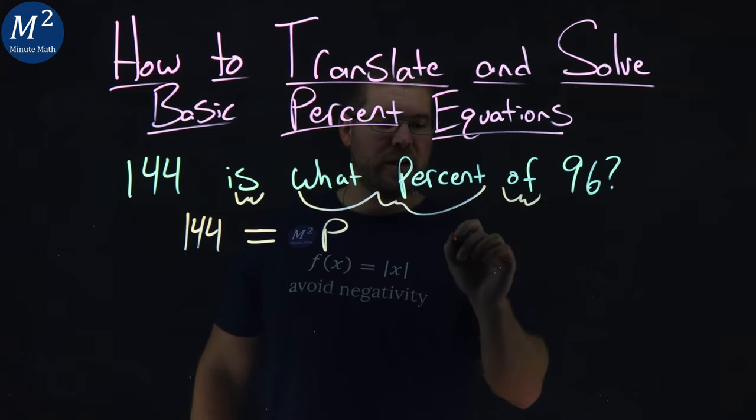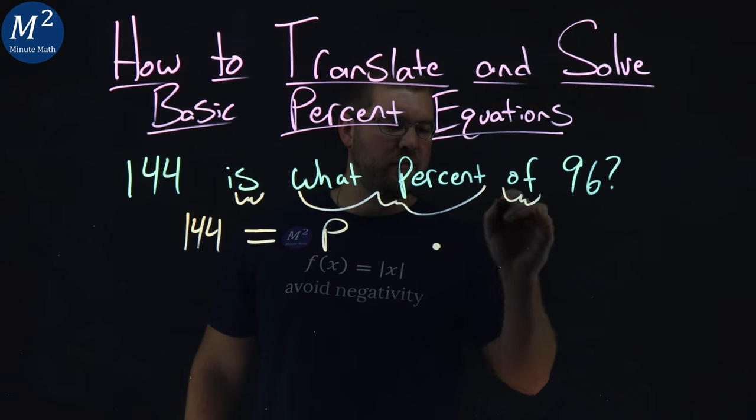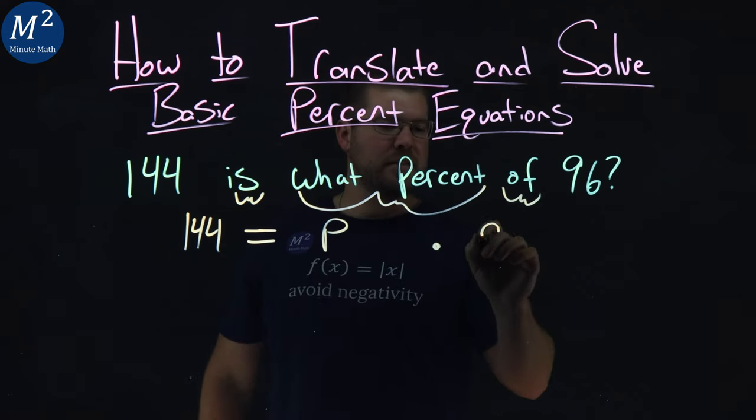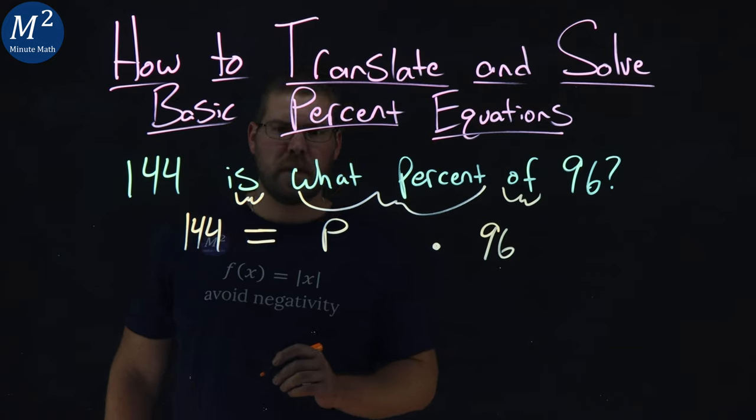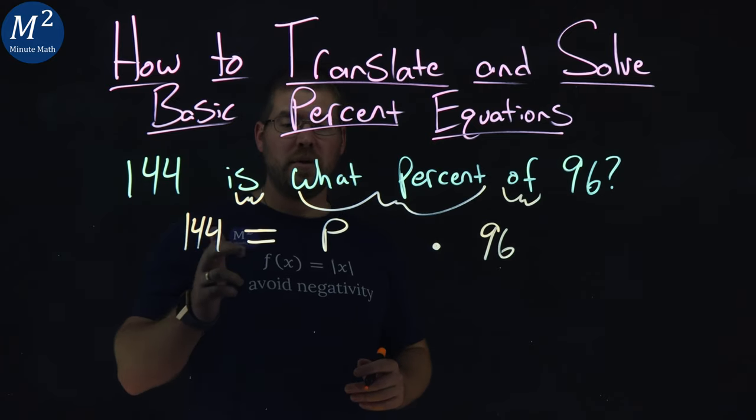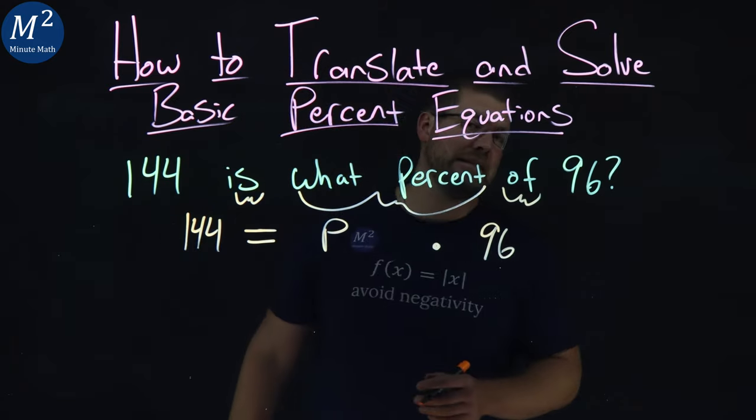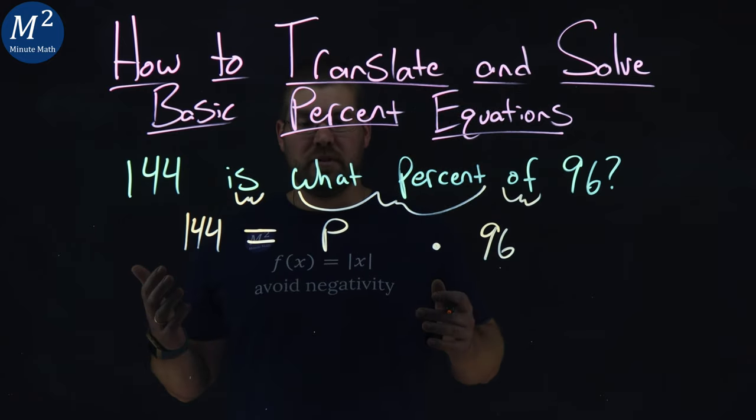P of comes down to be multiplication. I'll put it here, kind of so you can see it. And then 96 right there. And so now we have 144 equals P times 96. Now we have to solve this.